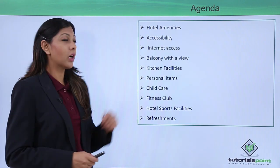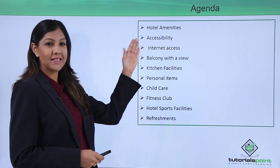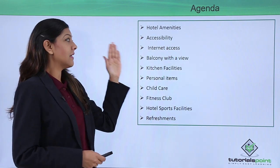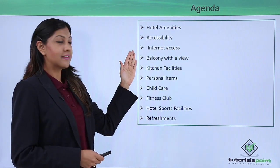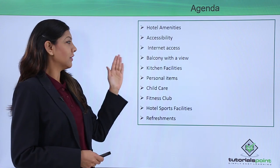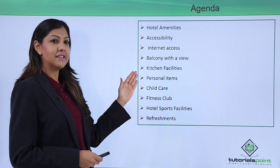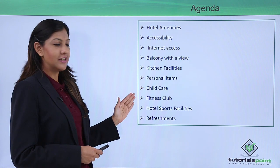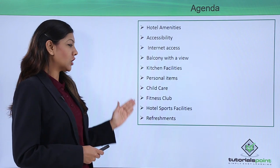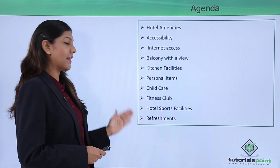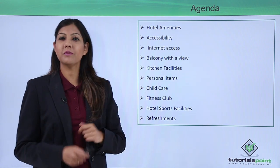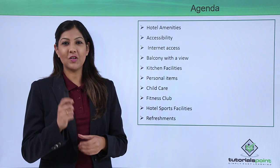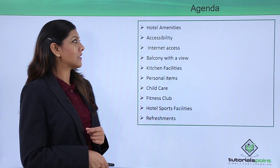We will talk about what exactly are hotel amenities, accessibilities, internet access, balcony with a view, kitchen facilities, personal items, childcare, fitness club, sports facilities, as well as refreshments which are provided by that particular hotel.